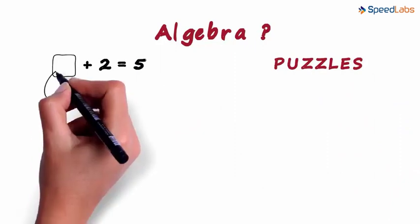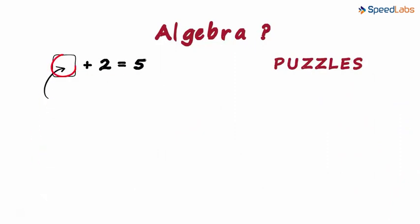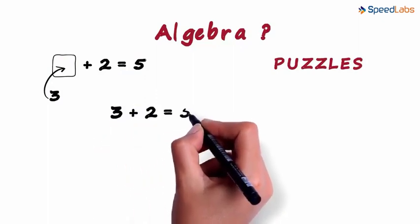We just have to find the number in this box. Which number when added to 2 gives us 5? Simple. It's 3. We can say that 3 plus 2 equals 5.